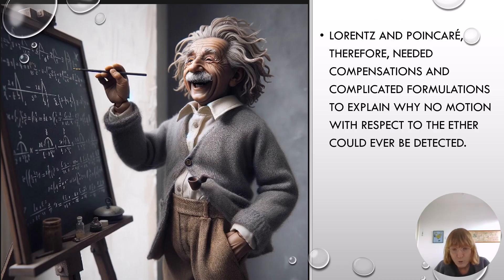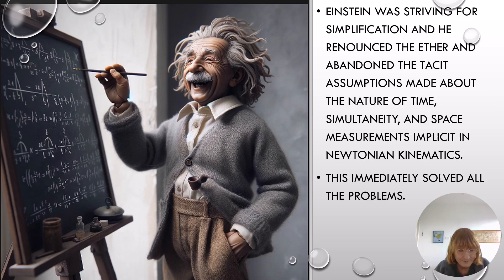Lorentz and Poincaré therefore needed compensations and complicated formulations to explain why no motion with respect to the ether could ever be detected. Einstein, on the other hand, was striving for simplification. He renounced the ether and abandoned the tacit assumptions made about the nature of time, simultaneity, and space measurements implicit in Newtonian kinematics. This immediately solved all the problems.